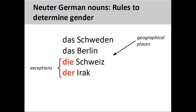Finally, the names of countries, cities, and continents — such as 'Schweden' (Sweden) and Berlin — are neuter, although you need to be aware that exceptions to this rule, such as 'die Schweiz' (Switzerland) and 'der Irak' (Iraq), also exist.